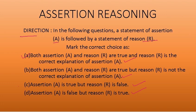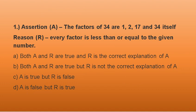So in the next slide, I will show you the question. First, assertion: the factors of 34 are 1, 2, 17 and 34 itself. Every factor is less than or equal to the given number. Here is the fourth option.